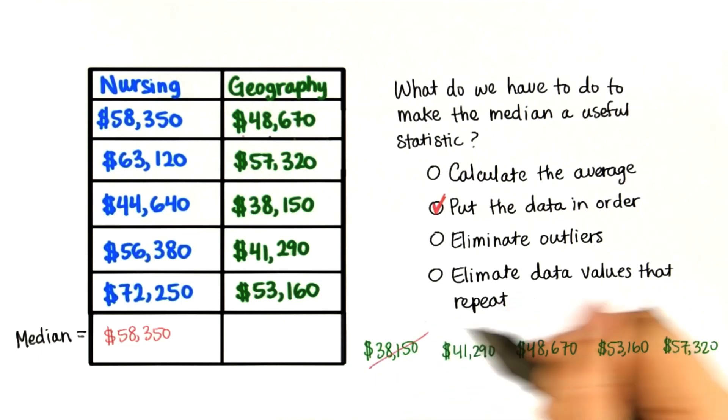So again, we'll cross off first and last, second to first, second to last, and we're left with one in the middle.